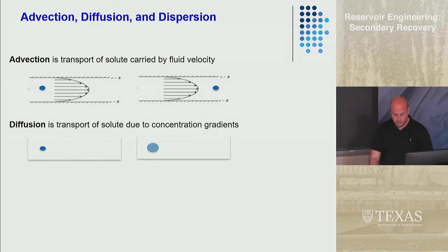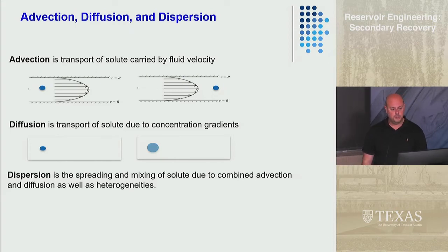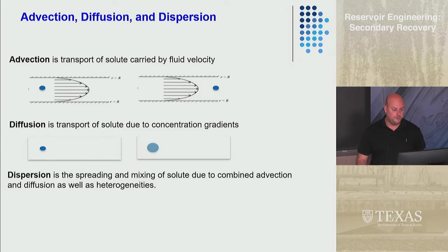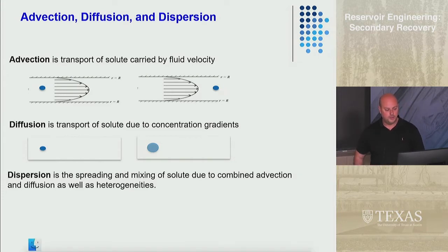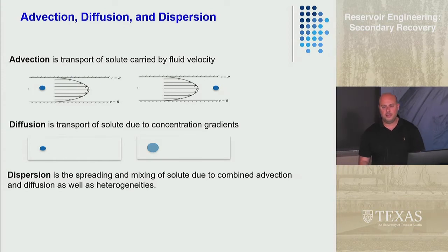Then there's dispersion — the spreading and mixing of solute due to the combination of advection, diffusion, and heterogeneities. Dispersion can be difficult to differentiate from diffusion at first. The words look alike, we use D for both, and mathematically we treat them the same. But they are different phenomena. Diffusion is due to concentration gradients alone. Dispersion is mixing due to velocity — it requires advection to occur, but it's an additional transport mechanism on top of advection.